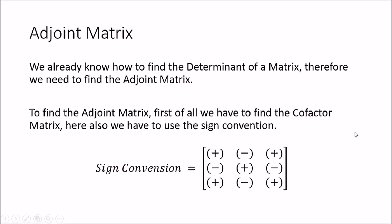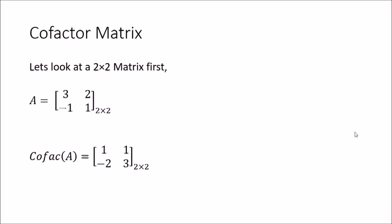Let's see how to find the cofactor matrix. Let's say A equals [3, 2, -1, 1] — a 2 by 2 matrix. Finding the cofactor matrix is somewhat similar to finding the determinant but slightly different. We take the 1,1 element — the first row, first column — remove that row and column, and we are left with 1. So that is the value we place here.